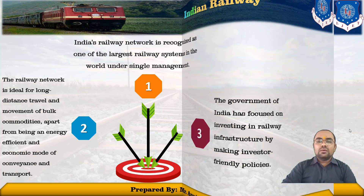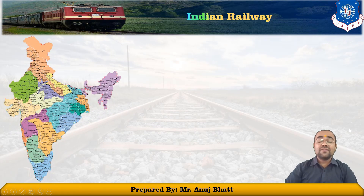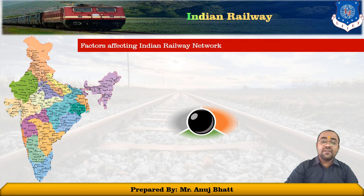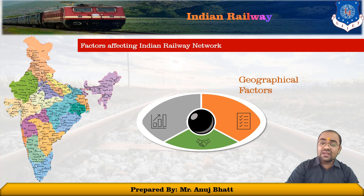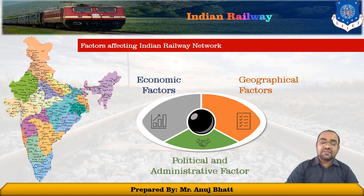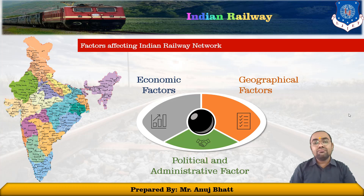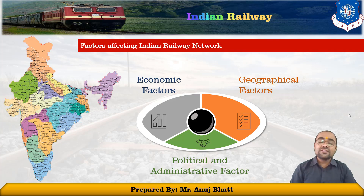Now let us discuss the factors that affect Indian Railways. The pattern of the Indian railway network has been influenced by geographical, economic, and political factors. Talking about geographical factors, the North Indian plains with their level land, high-density population, and rich agriculture present the most favorable conditions for development of railways.